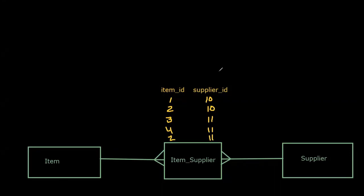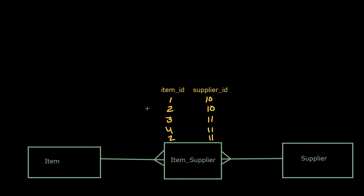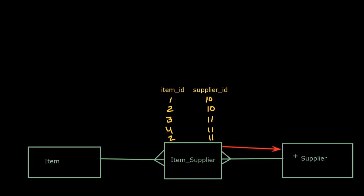Using this intersection table in the middle, I can figure out which items are supplied by which suppliers. If I ask the database which suppliers provide item number two, I look in the item supplier table and find that the associated supplier IDs are 10 and 11. I could then follow that relationship to the supplier table to find more information. This is how we actually implement many-to-many relationships, and we'll see it again during our remaining time together.